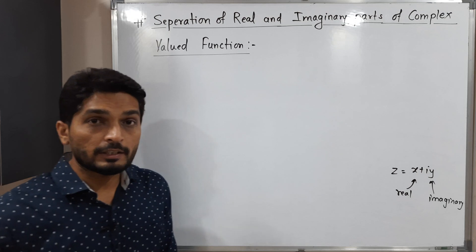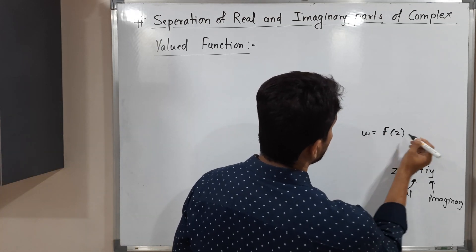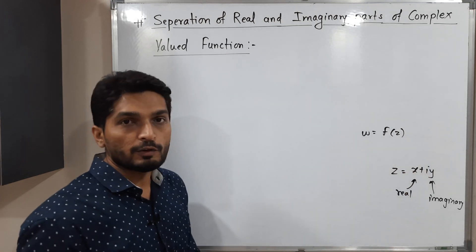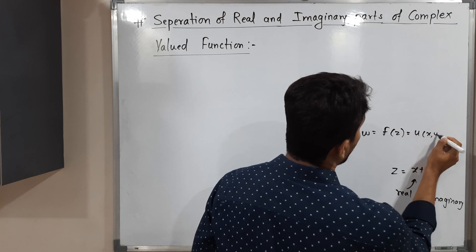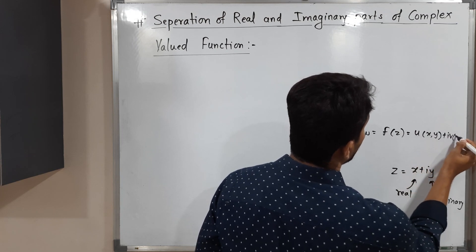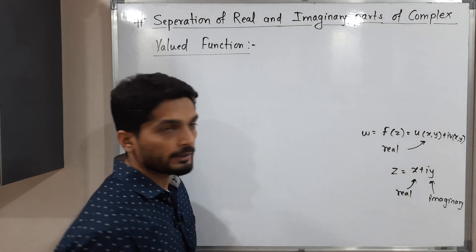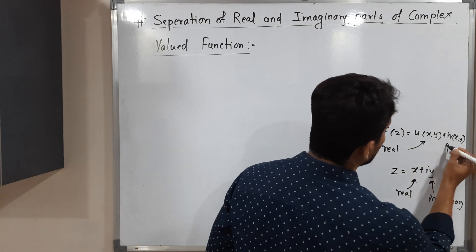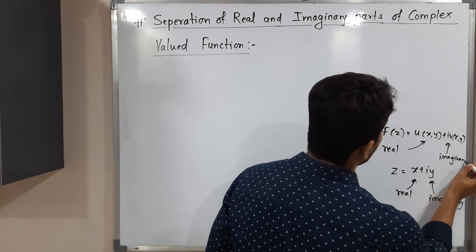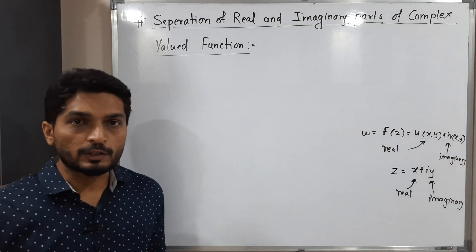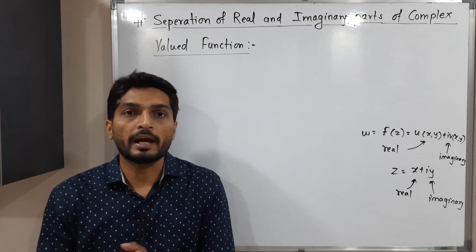Similarly, when we have any complex valued function, we denote it as w equals f of z. That complex valued function can also be expressed as u(x,y) plus i·v(x,y), where u is the real part and v is the imaginary part of that complex valued function. So if we have any function, we can always find its real part u and imaginary part v.